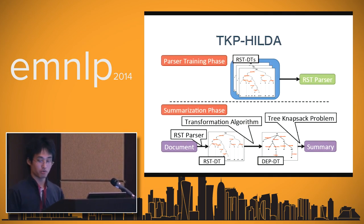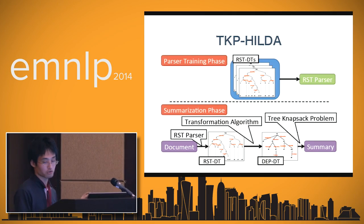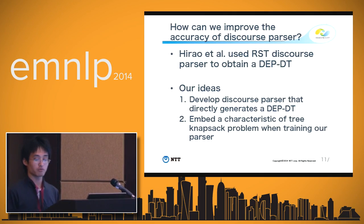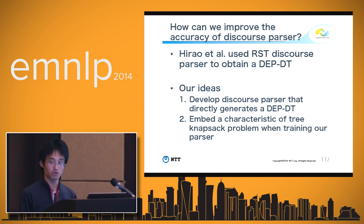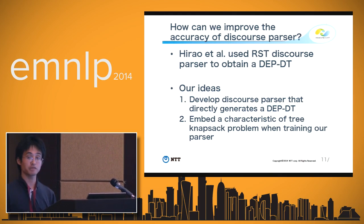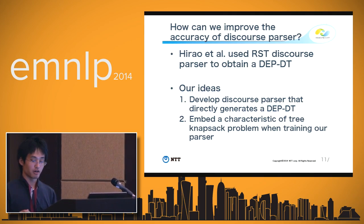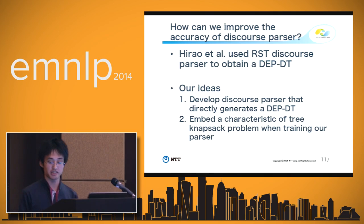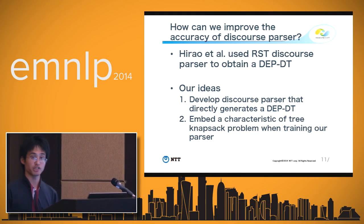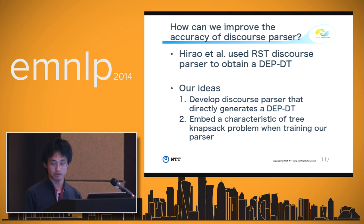For the RST parser, we use HILDA, one of the state-of-the-art RST parsers. This is the overview of Hirao's system. We have two ideas to improve the accuracy of the discourse parser for summarization. In Hirao's method, the DEP-DT is obtained by converting the RST-DT. But for the tree-knapsack problem, the input is DEP-DT, so how about obtaining the DEP-DT in a more direct way? The first idea is developing a discourse parser that directly generates DEP-DTs. The second idea is embedding the characteristics of the tree-knapsack problem when training our discourse parser.